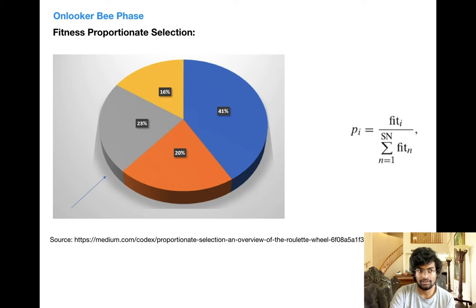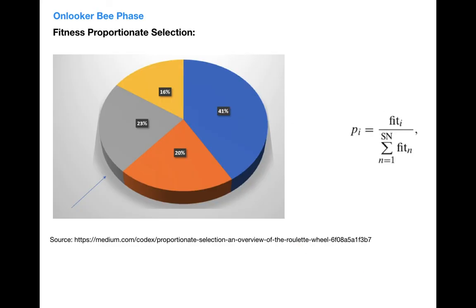This is essentially the same as roulette selection that we've seen in genetic algorithms. Here also, onlooker bees keep their current position if the new position's fitness is worse, or update to the new solution if they find a higher fitness solution.